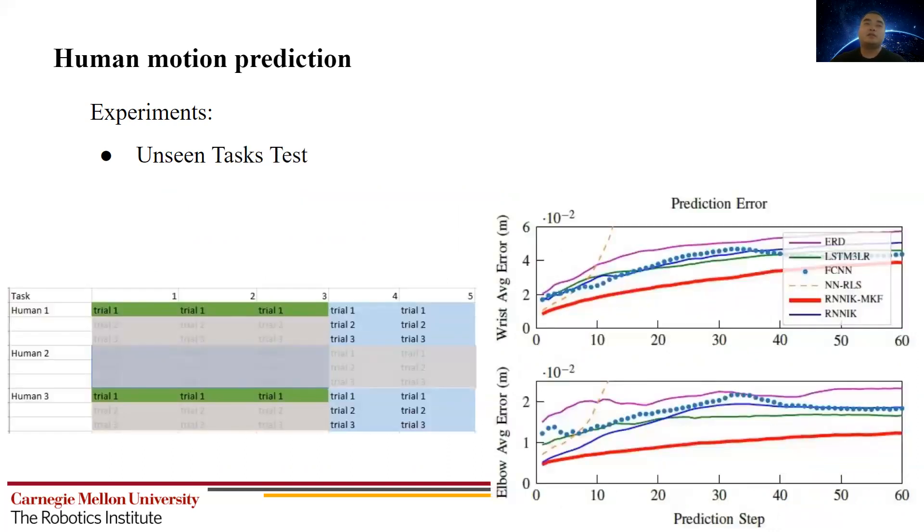The third test is for unseen tasks. Similar to the previous unseen human tests, we can see the adaptation here also effectively reduced error. And our method in red achieved the lowest error.